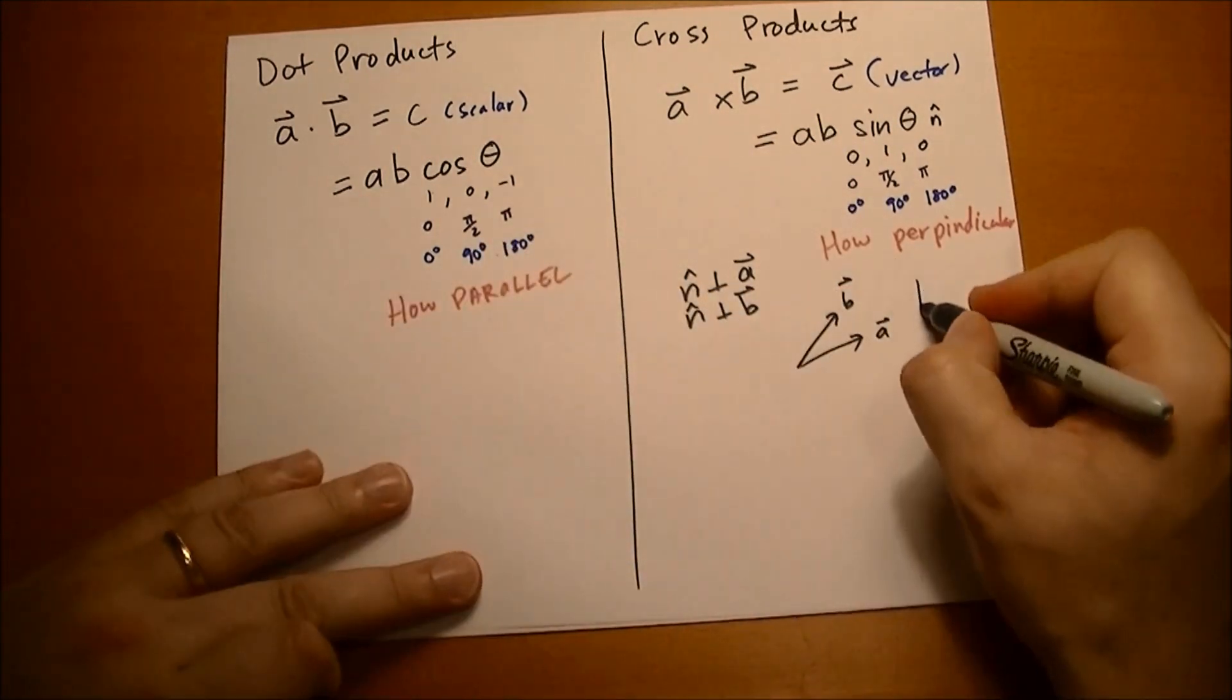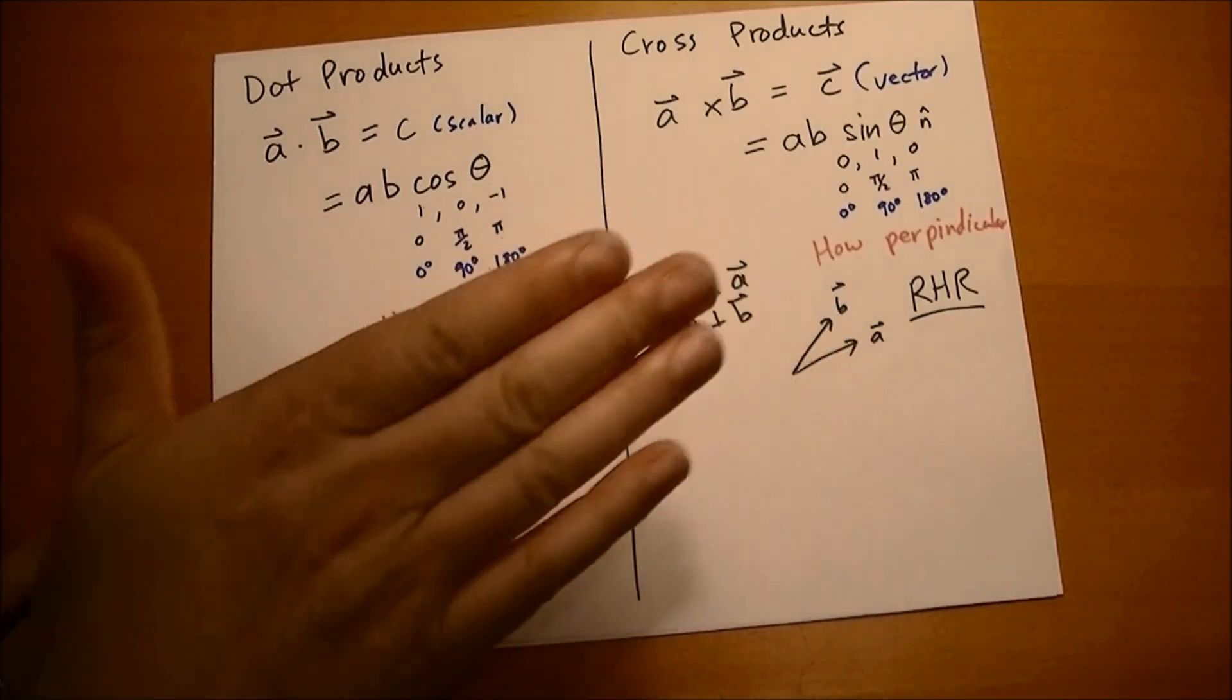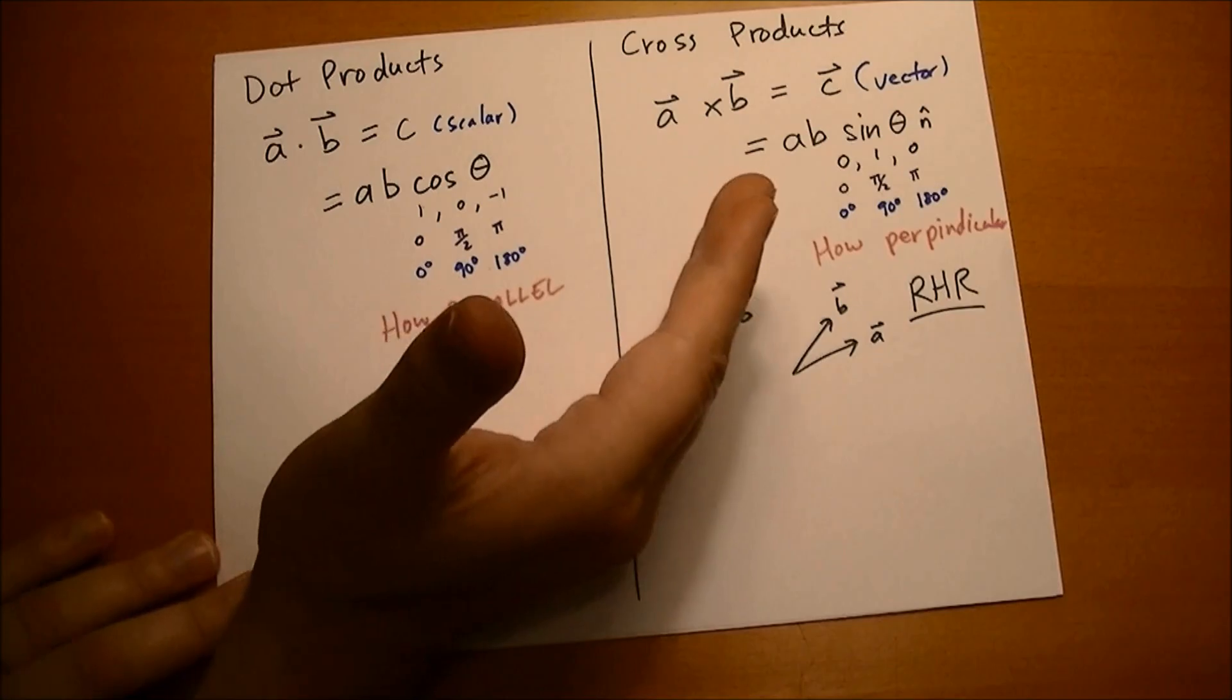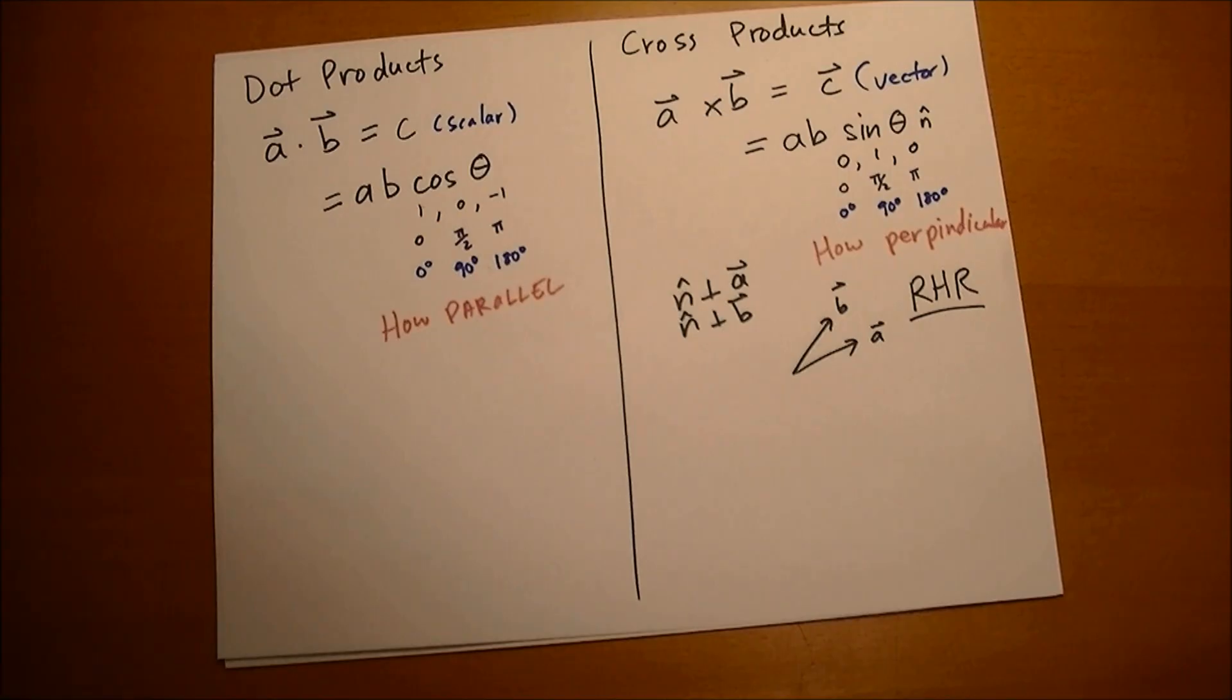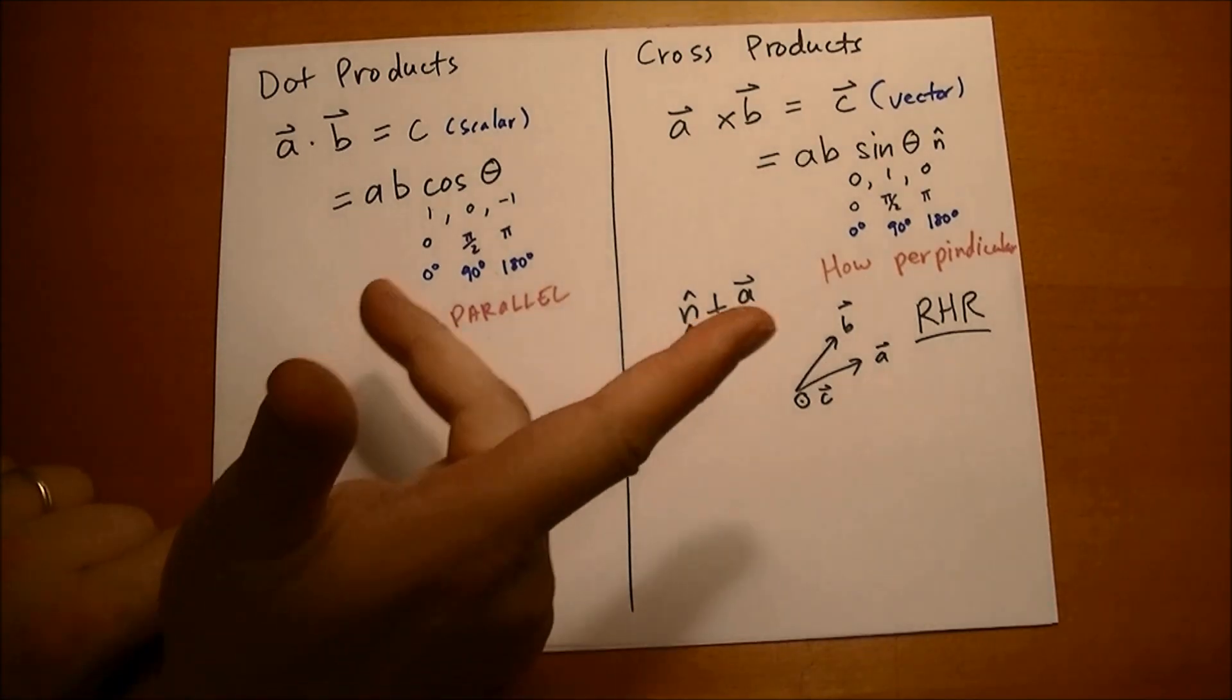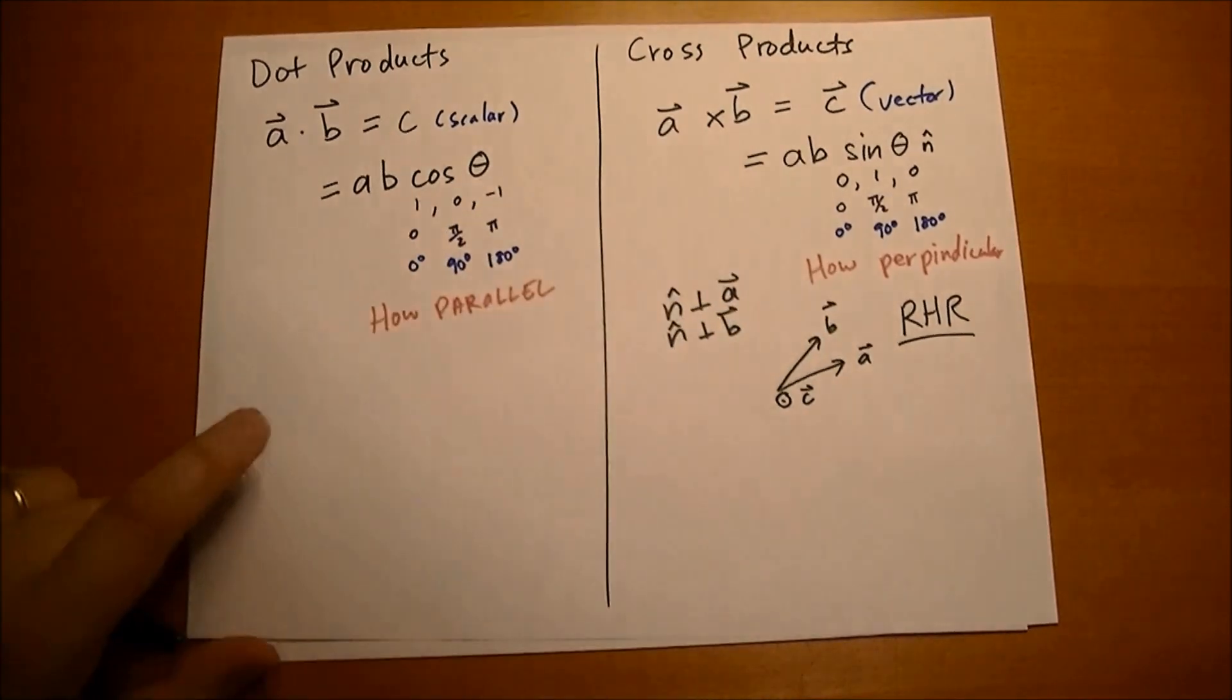And if we're going to follow the right hand rule, which we will, the way you do this is you take your right hand and align it in the direction of a. And you take your fingers and curl it towards b. Your thumb is going to point in the direction of the cross product. So you're going to draw that with a circle with a dot, representing a vector coming out of the page. That's the right hand rule. You might see people also do this with their fingers - this is the first vector a, this is the second vector b, and the thumb must point in the direction of the cross product.